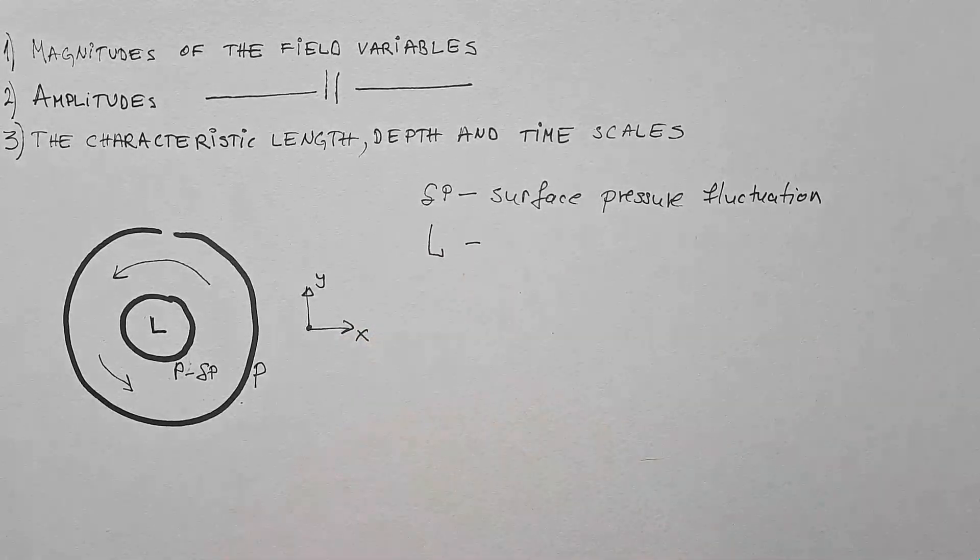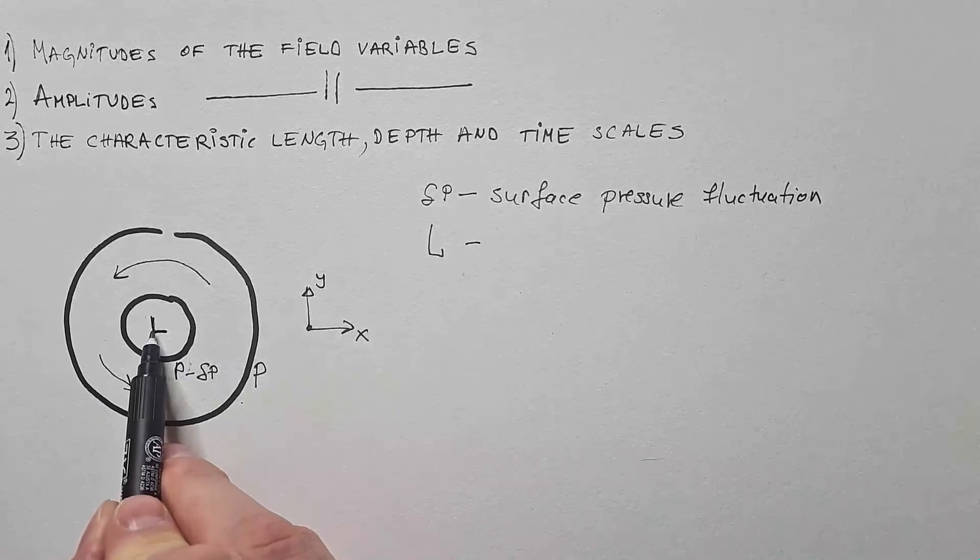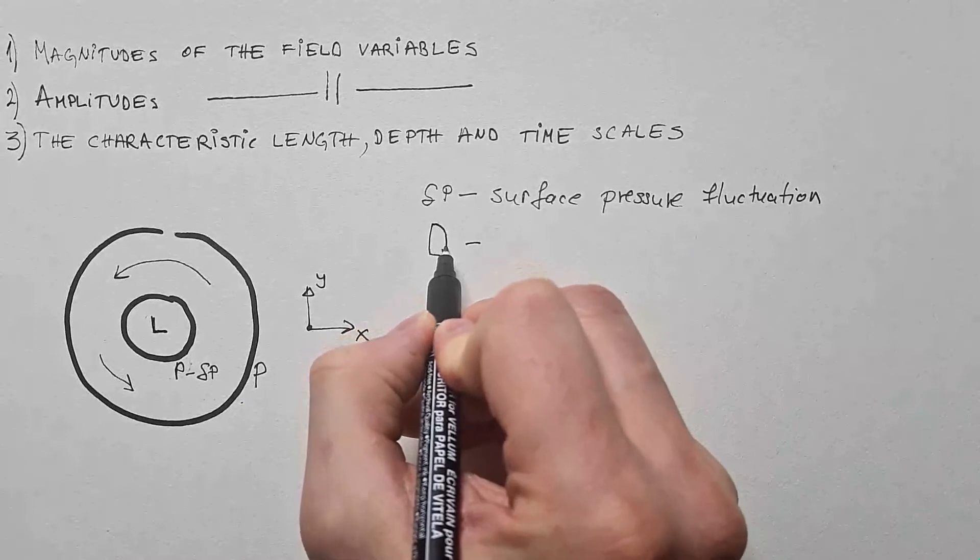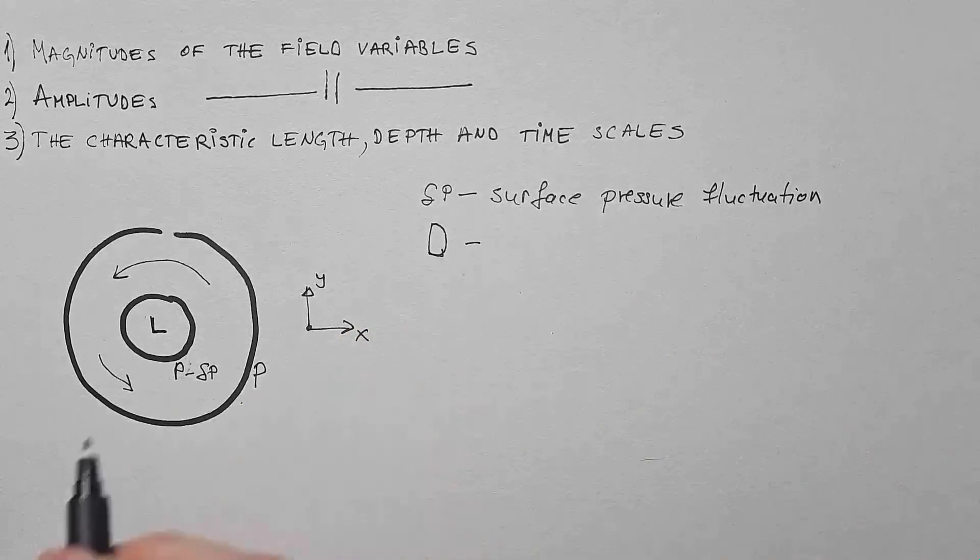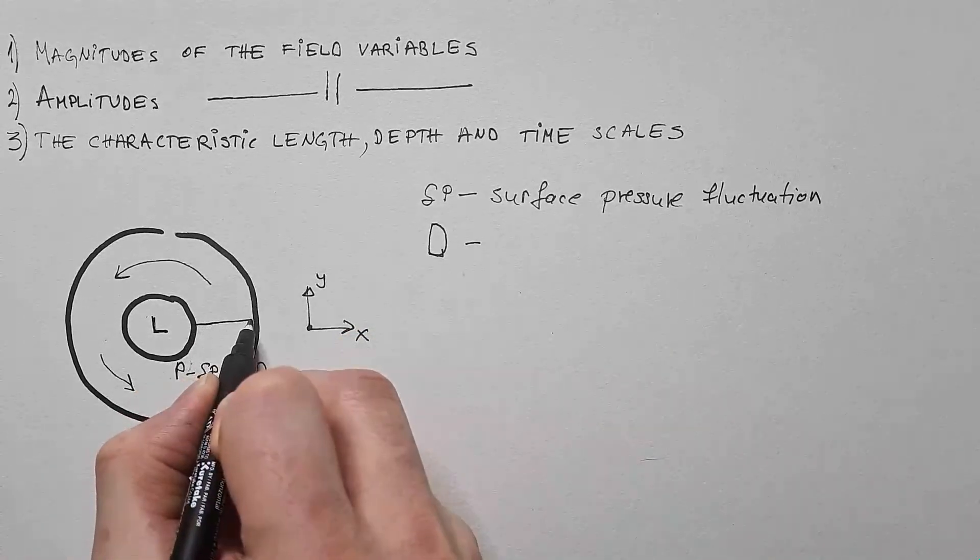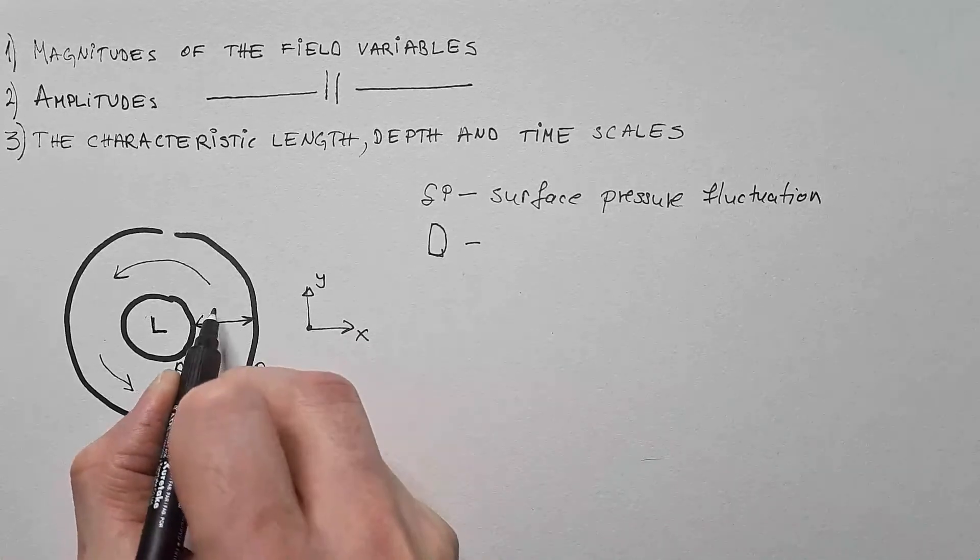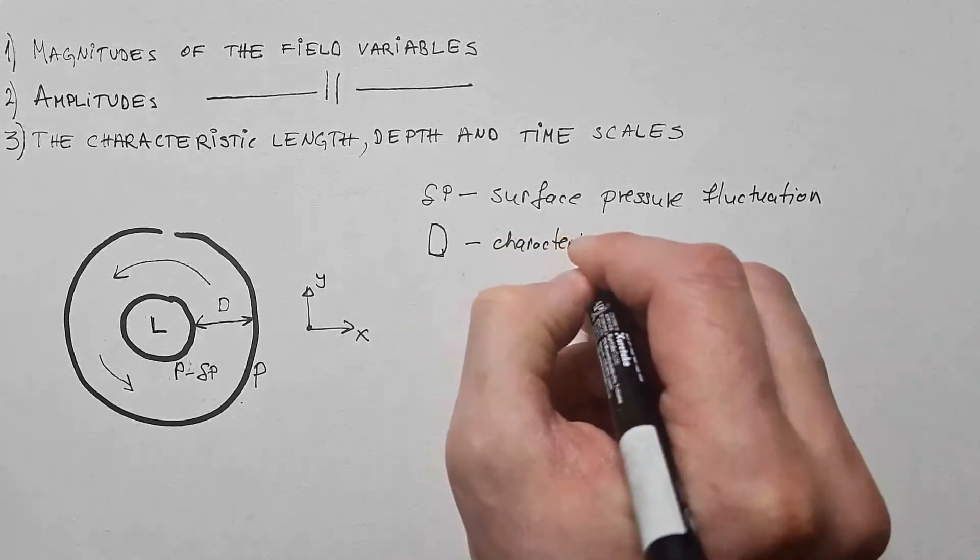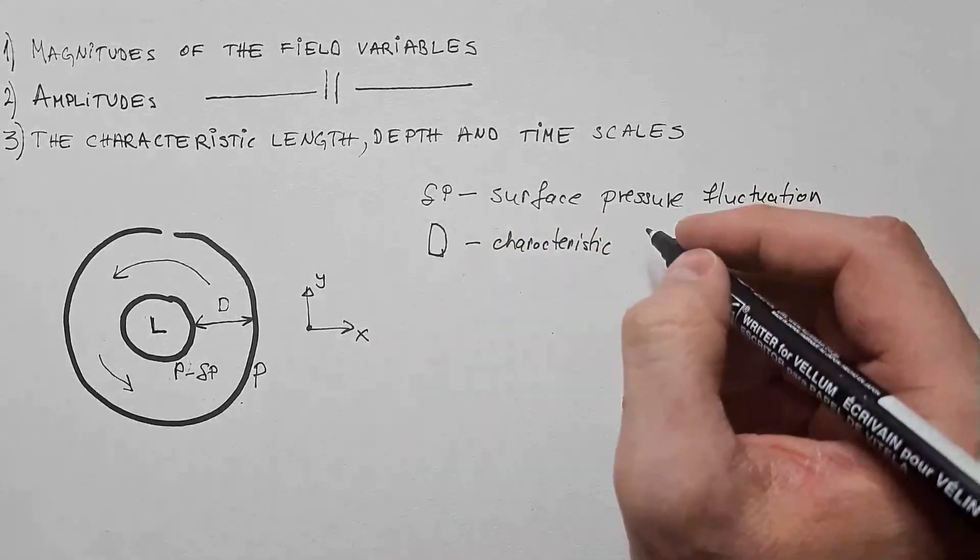Now I see I a little bit maybe messed up because L is used to indicate here low pressure. So I can use D to indicate this horizontal distance. And this horizontal distance D would be this. So D is characteristic horizontal scale.